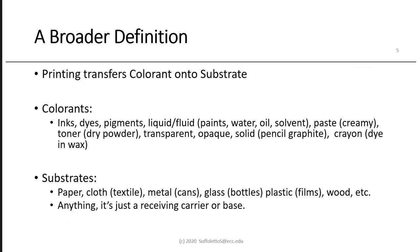A broader definition of printing would be: printing transfers colorants onto substrates. Colorants could be inks, dyes, or pigments — liquid fluids like paints, water, oil, and solvent-based. They could be a paste or a toner, which is a dry powder. Inks can be transparent or opaque, a solid like pencil graphite, or a crayon, which is a dye in wax. Substrates would be any type of paper — cellulose fiber from wood, cloth textiles from cotton, metal cans, glass bottles, plastics, films, or wood. Anything that can receive ink can be a substrate.